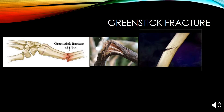A greenstick fracture is a break where one side of the bone is broken while the other side remains intact, giving it a slight bend. It can be compared to a tree branch splintering, where only a partial break is observed and the rest of the branch hangs on and bends. This type of fracture most commonly occurs in children because their bones are softer and more flexible.